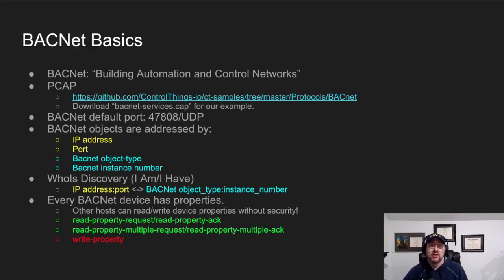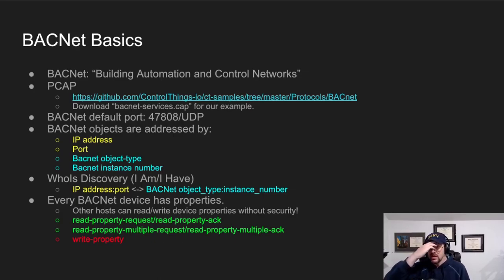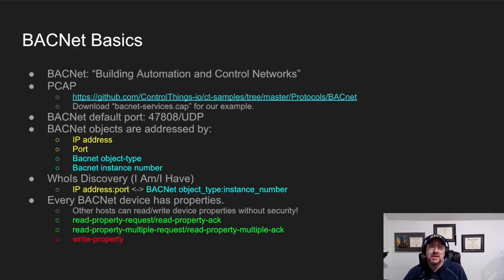For the purposes of this presentation and demo, there is a PCAP out there — I gave you the link. It's public, you can download it. I'm going to use the one titled BACnet-Services.cap. Another piece of information: BACnet's default port is 47808 UDP. It can be on other ports, but 47808 is the one I see it on most often.